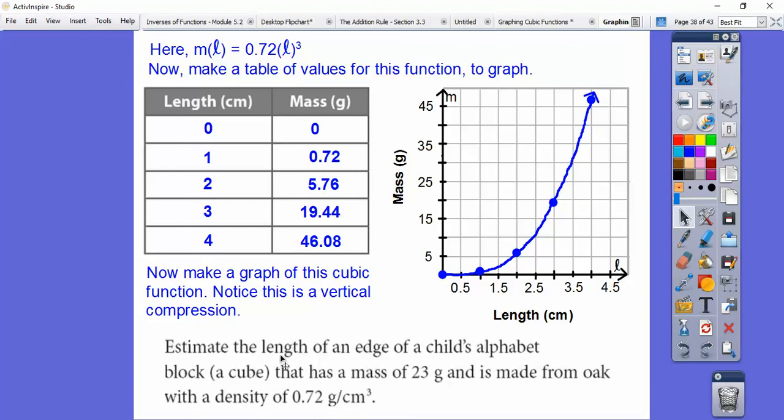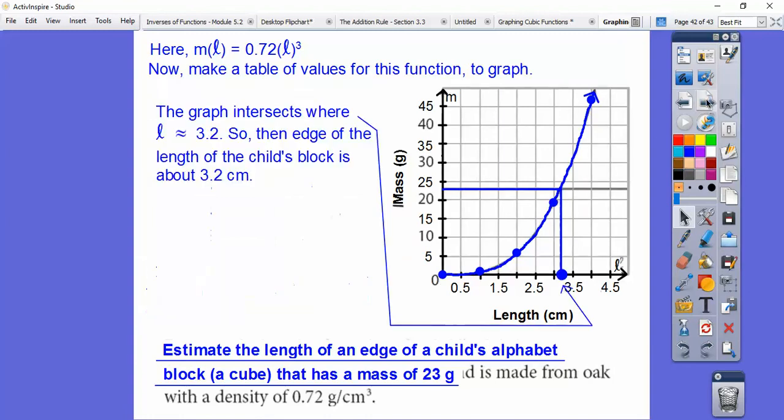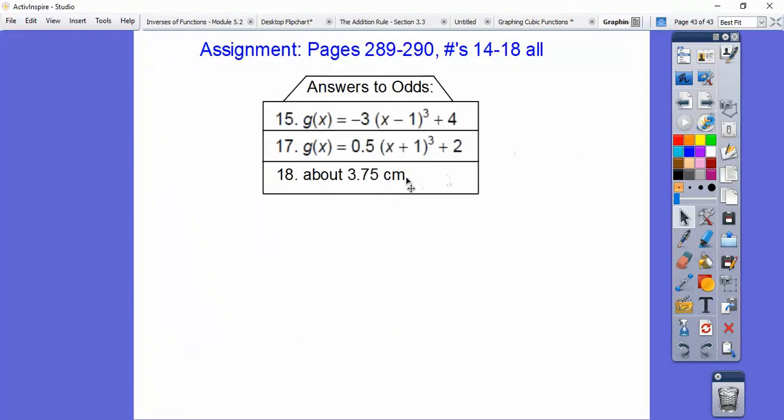Now that we've graphed it, now we're going to answer this question. We're going to estimate the length of an edge of a cube's alphabet block that has a mass of 23 grams. So here's the masses over here, here's the lengths of the cube. So now we have the cubic equation that we created. We're going to go up here to 23 and go straight over, then go straight down. I'm guessing there's 3, there's 3.5, probably about 3.2. So I'm going to estimate that the length of the cube is about 3.2 centimeters. I hope that makes sense. This application is exactly the same as the one we just did. All right, you guys, take care. Thank you.